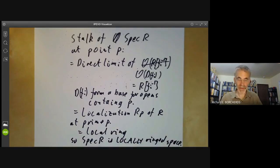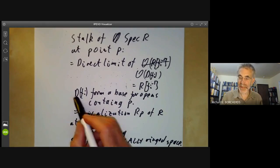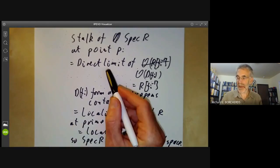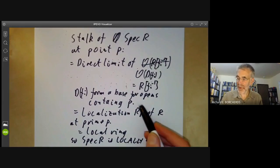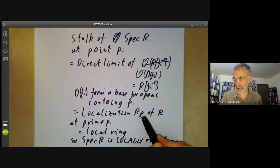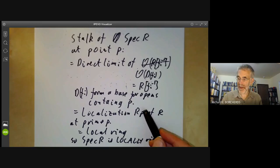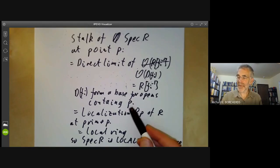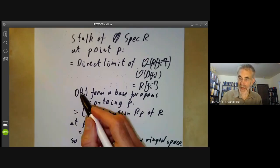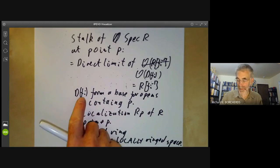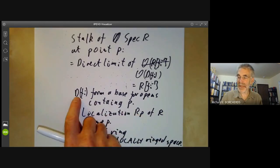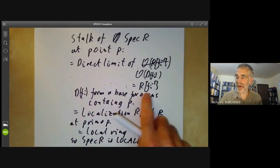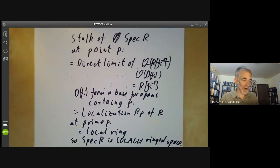There's an alternative construction for the spectrum of R in Hartshorne, where he more or less does this whole construction backwards. Instead of starting with the sets D(Fᵢ) and constructing the scheme and then deducing that you have these local rings at all the points, what he does is start with a sheaf defined by these local rings at every point and deduce that the value of the sheaf on these sets D(Fᵢ) is R[Fᵢ⁻¹]. So you can do it either way round. The next lecture will be discussing morphisms of schemes.